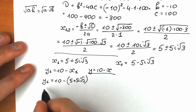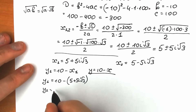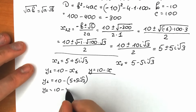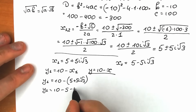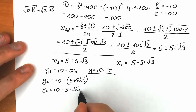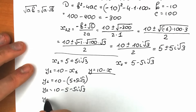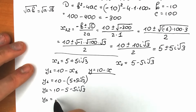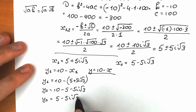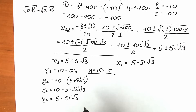So y₁ equals 10 minus 5 minus 5i square root of 3, which gives y₁ equals 5 minus 5i square root of 3.